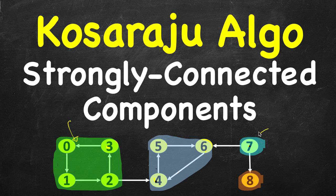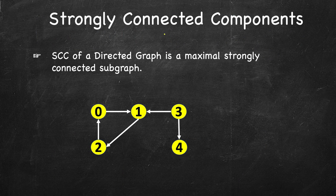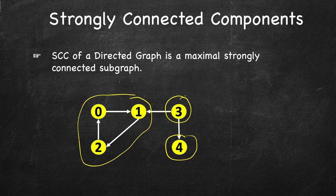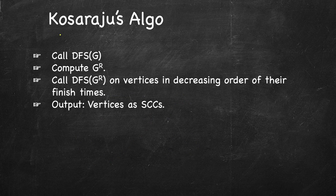Vertex 7 itself is a strongly connected component, and similarly vertex 8. A strongly connected component is a maximal strongly connected sub-graph — you cannot find a larger sub-graph. So this is one strongly connected component, this is another, and this is a third.